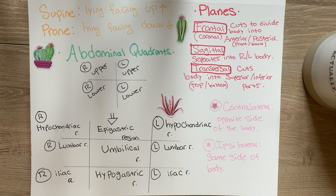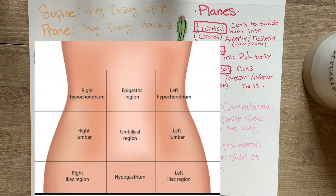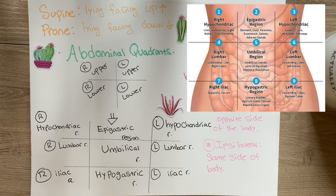Moving on to the abdominal area — you can describe it in a few ways. The simplest is by quadrants: right upper, left upper, right lower, and left lower. You can also use the nine regions for more specificity. Since there are many organs in the abdominal area, some even overlapping others, you want to be as specific as possible. For example, if a patient comes in with stomach pain, you might note pain in the right lower and left lower quadrant, or more specifically, the right iliac and left iliac regions.